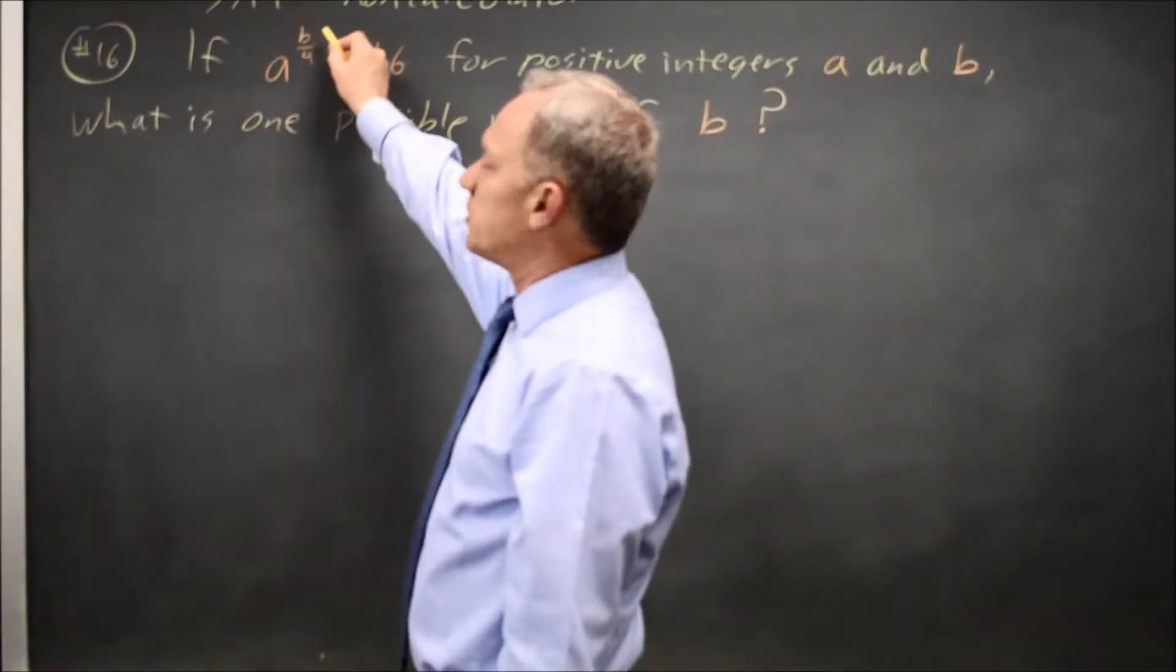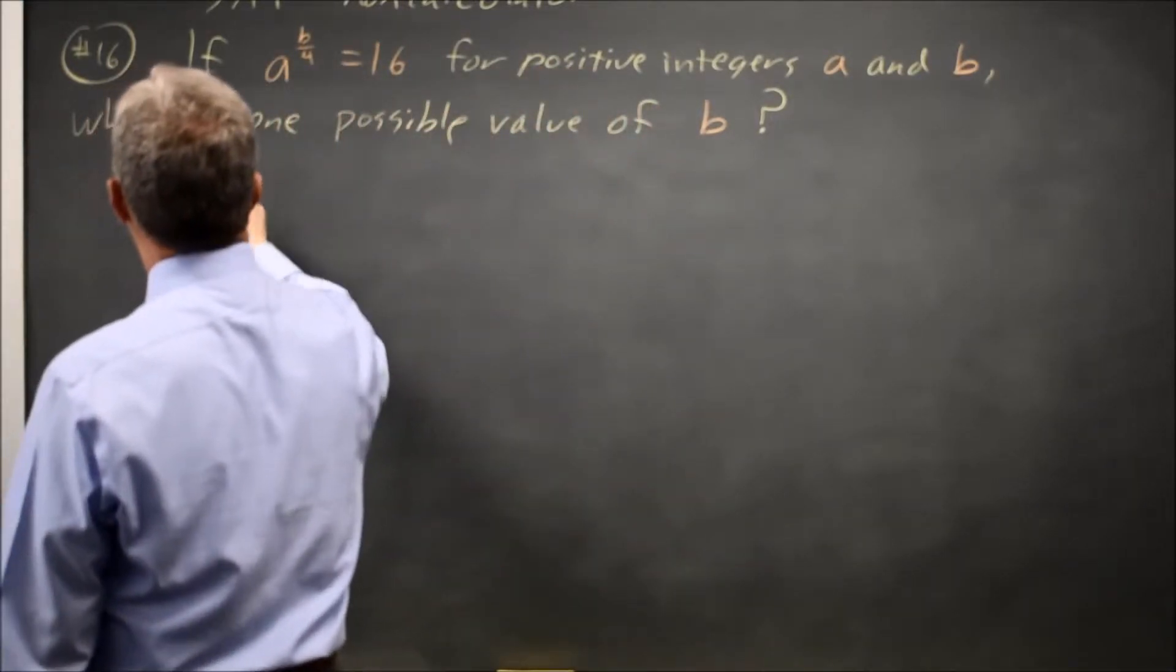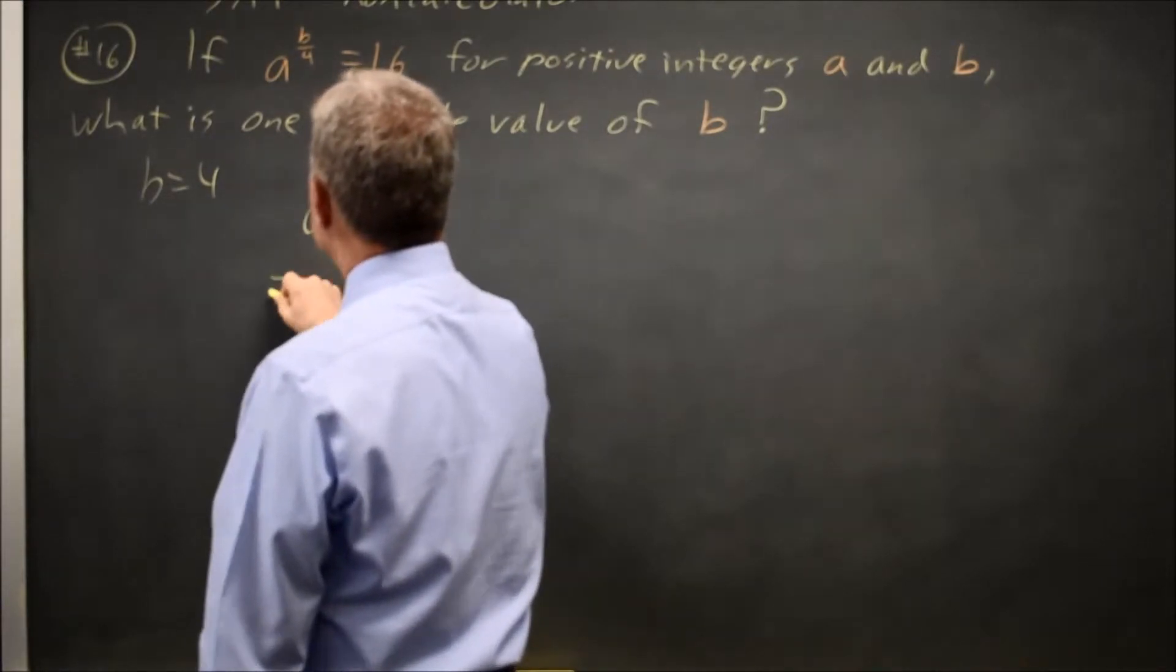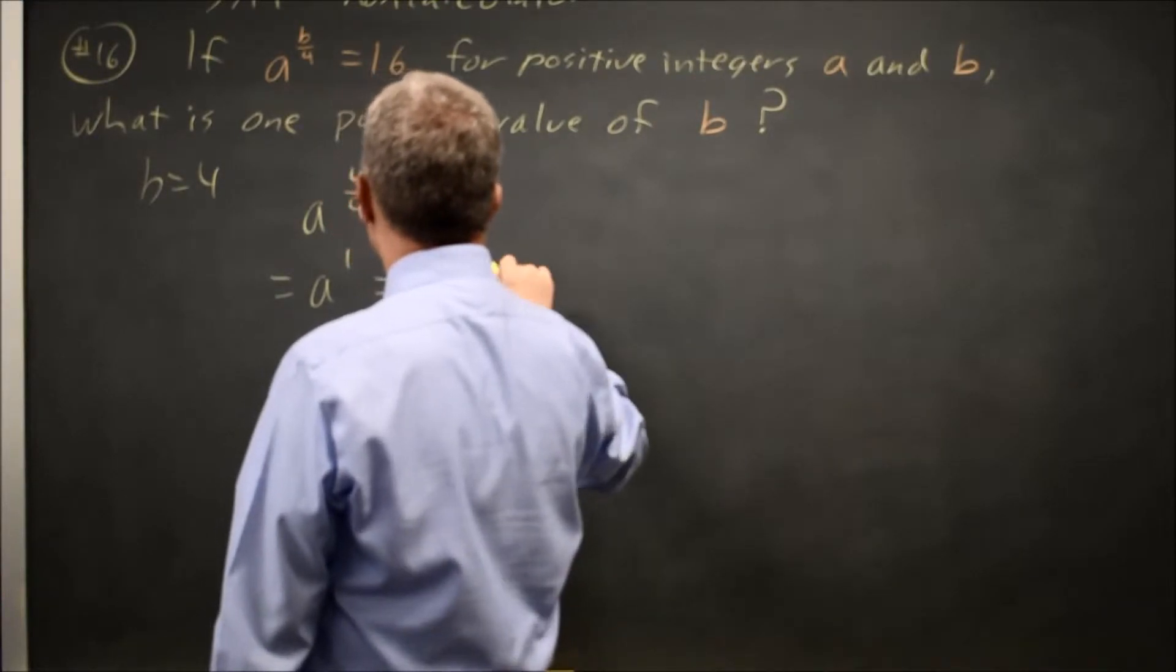Well, an easy way to do exponents is if the exponent is 1, so I'm going to take b equals 4 and see if I can get that to work. Then a to the 4 over 4 is a to the 1, and that is just a, but I want that to be 16.